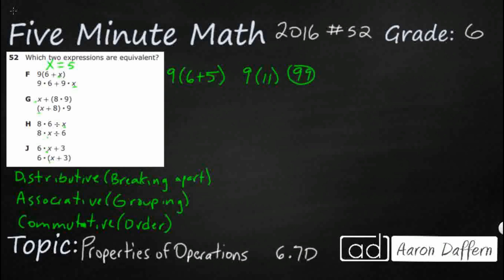And let's look at this second one right here. So we've got 9 times 6 plus 9 times 5. Put that 5 in there for the x. So 9 times 6, that is going to be 54. 9 times 5 is going to be 45. And add those two up, and guess what you get? 99.